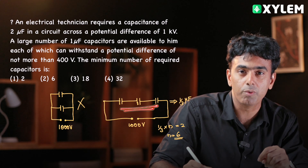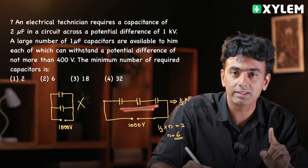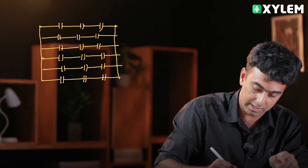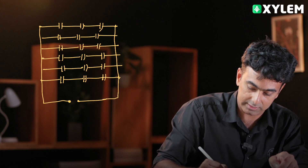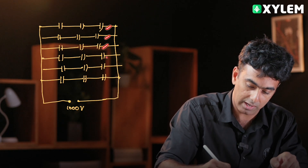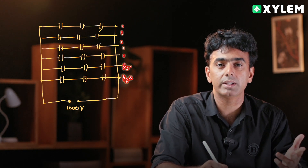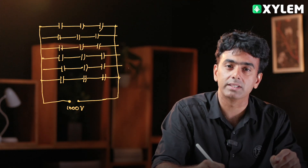If one row has 3 capacitors, how many rows do we need? We need 6 rows. So we get 6 rows — first row, second row, third row, fourth row, fifth row, sixth row. Each row contributes 1/3 microfarad. Connected in parallel across 1000V: 1/3 + 1/3 + 1/3 + 1/3 + 1/3 + 1/3 equals 1/3 into 6, which gives 2 microfarad.